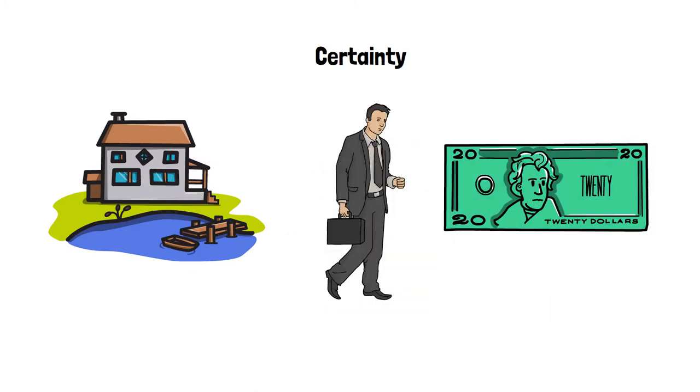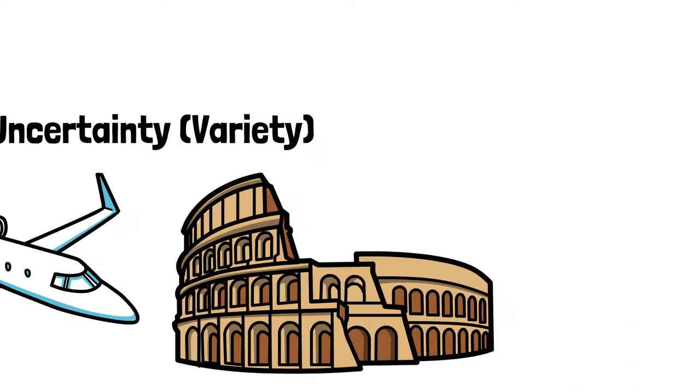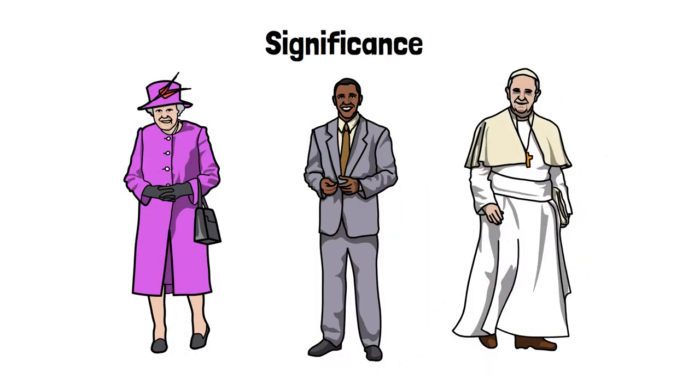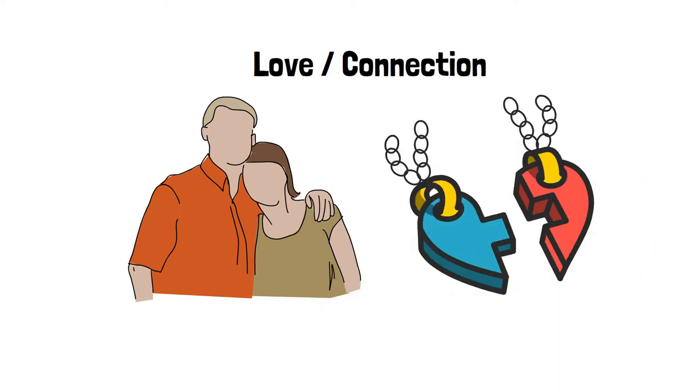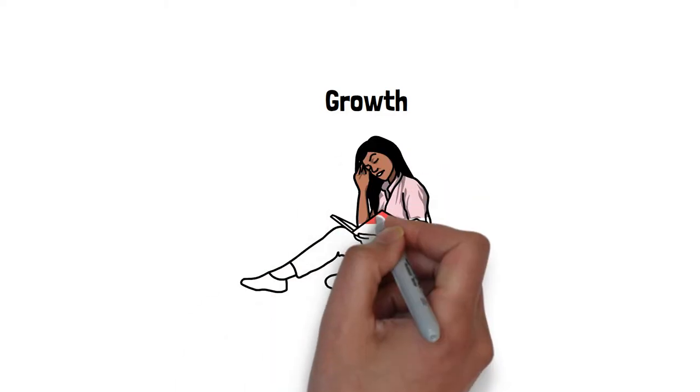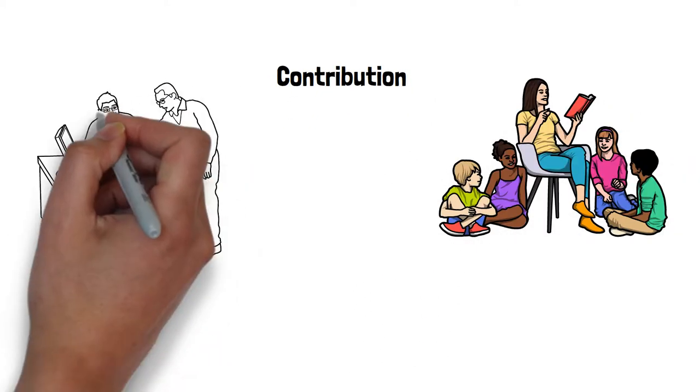Number one, certainty. You need to know you can avoid pain and gain pleasure. Number two, uncertainty or variety. You need change in your life, new experiences. Number three, significance. The feeling of importance and being needed. Number four, love and connection. A feeling of closeness or union with somebody or something. Number five, growth. The expansion of knowledge, skill, wealth, capacity, or capability. Number six, contribution. This means helping, giving, or supporting others.